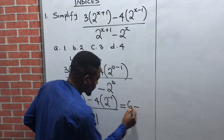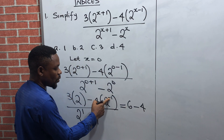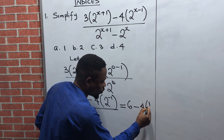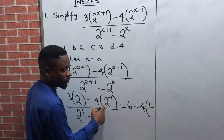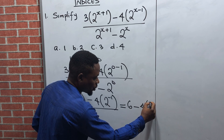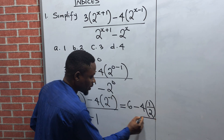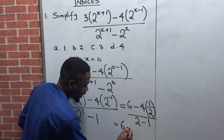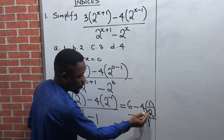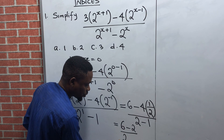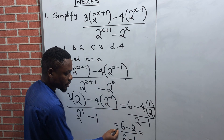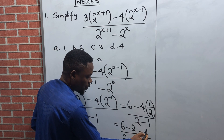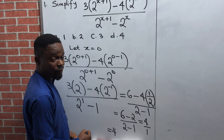Continuing: three times two gives us six. Then minus — observe that for the negative power of indices, the law says anytime you see a negative power, it stands as one over the number, so two raised to power minus one becomes one over two, and four times one over two is two. Then divided by: two raised to power one is two, minus one. So we now have six minus two, which gives four, all over two minus one, which gives one. Four over one equals four, which is the final answer.